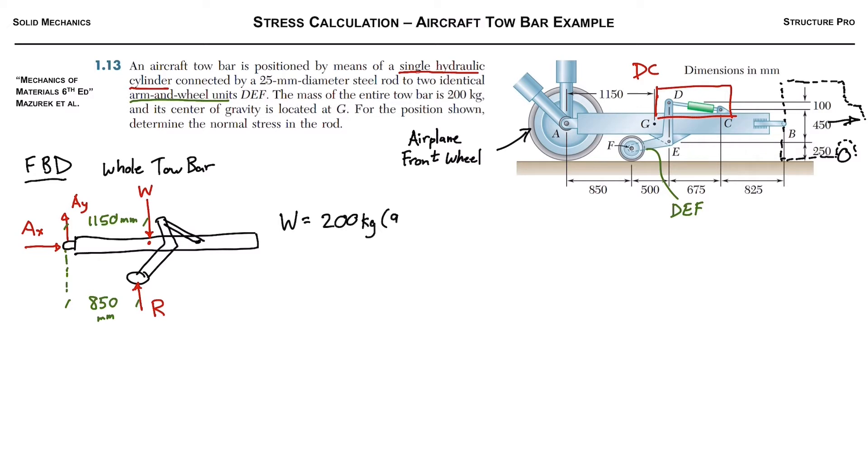And we can calculate, or it's actually given in the figure, the 1150 millimeters moment arm for the weight. So you can calculate the weight, we can convert it from kilograms to newtons just using gravity, F equals mg. Then as I said, we'll sum all the moments about point A.